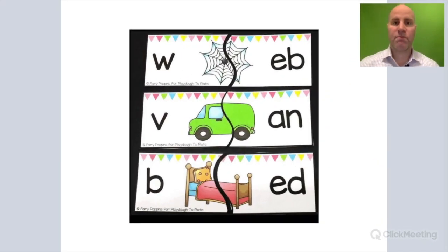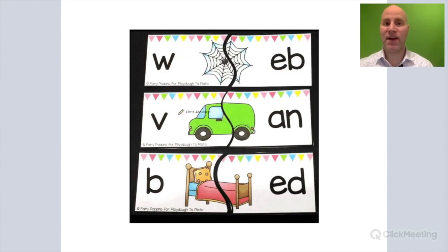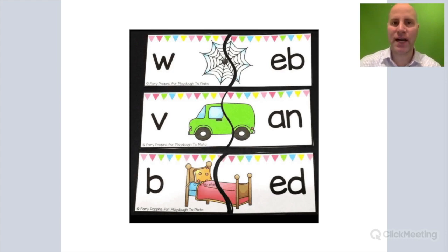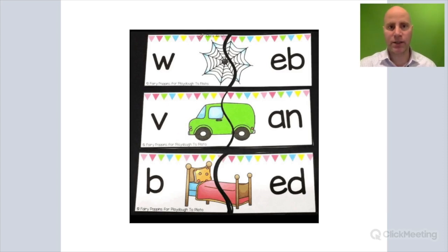In phonemic awareness, there are many activities you can do to help promote hearing individual sounds and isolating specific parts of a word, like the beginning sound. Here we have words like web, band, and bed. This activity is really isolating that initial sound. In these words, that initial sound is the onset — the beginning part of a word. In a single syllable word, the onset is that first part before the vowel.